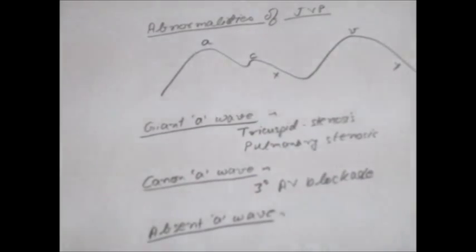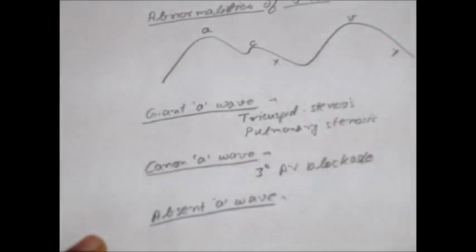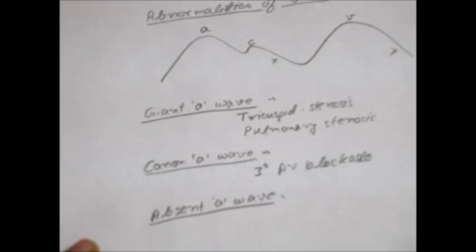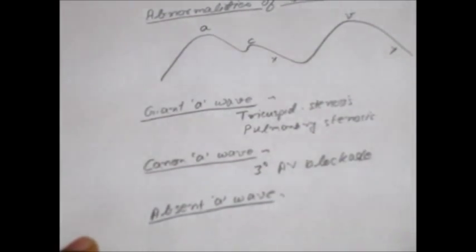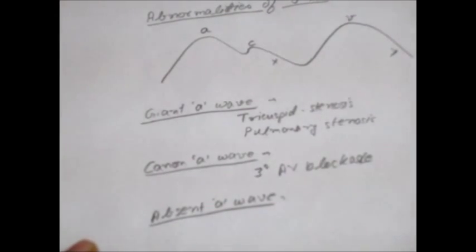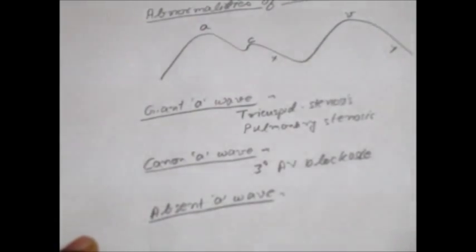Now let's discuss about absent A-Waves. Absent A-Waves are seen in atrial fibrillation, where we get only the twitching of the heart muscle but it's not a complete contraction.